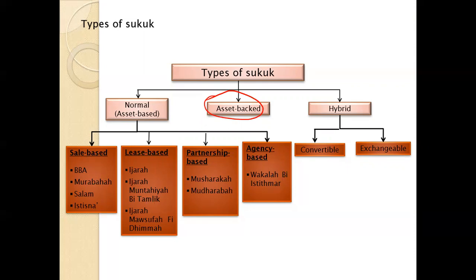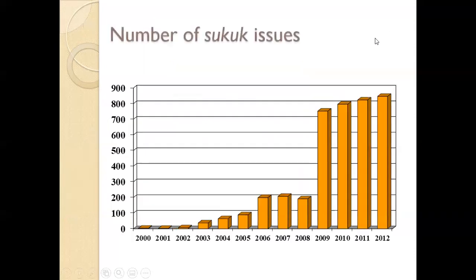In asset-based Sukuk, we will explore sale-based Sukuk such as Salam Sukuk and Istisna Sukuk, as well as lease-based Sukuk including Ijara and its variants. Some statistics show that the number of Sukuk issuances has been growing from close to 10 in the year 2000 to greater than 800 by 2012.